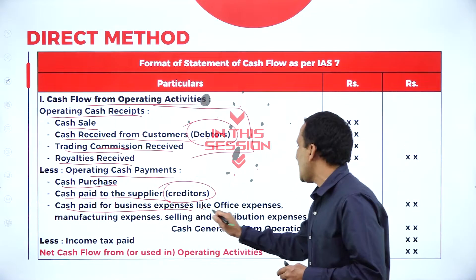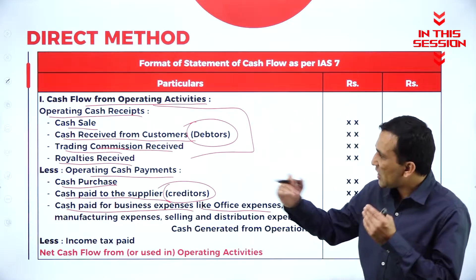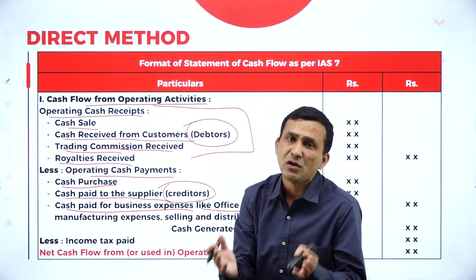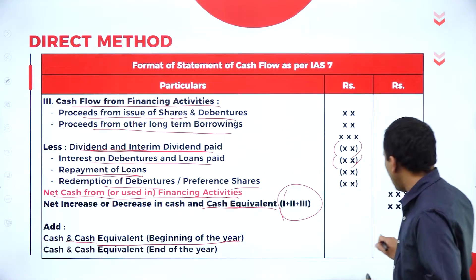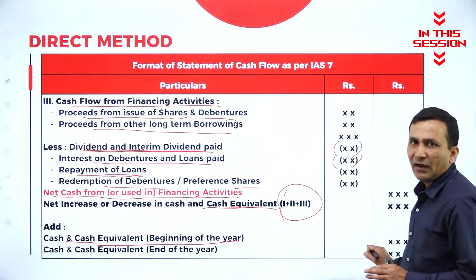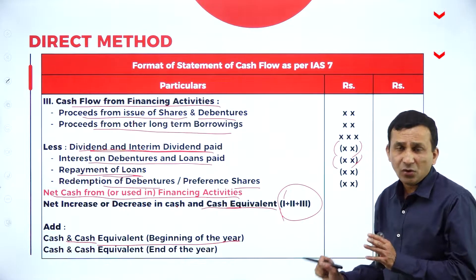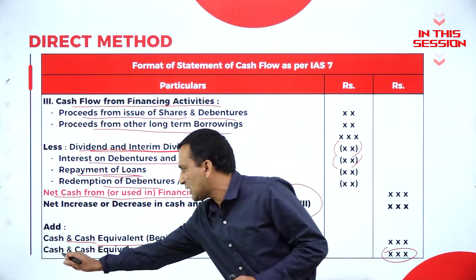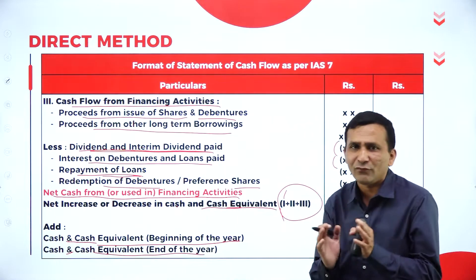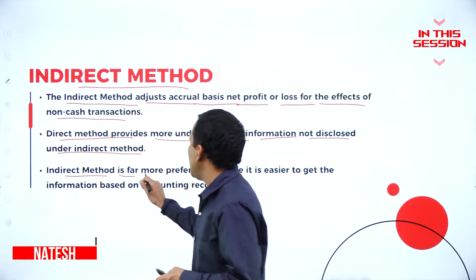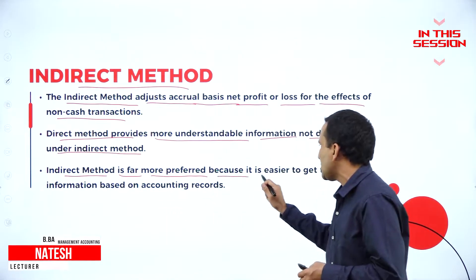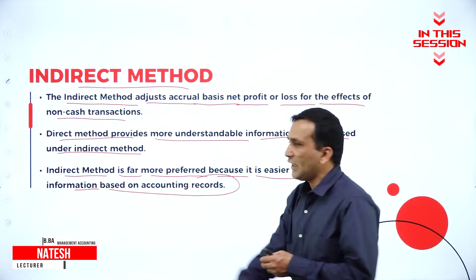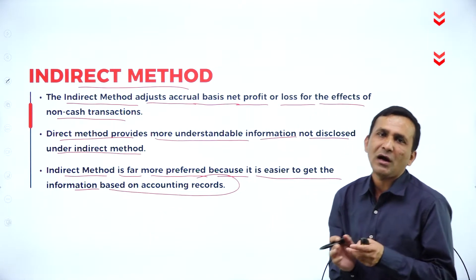Cash paid to business expense like office expense is related to operating activity. If you add whatever you have for the opening balance available in the cash or cash equivalent, so finally the balance we are getting is nothing but the cash and cash equivalent at the end of the year. The indirect method is more preferable because it is easier to get information based on the accounting records you are maintaining in your company.